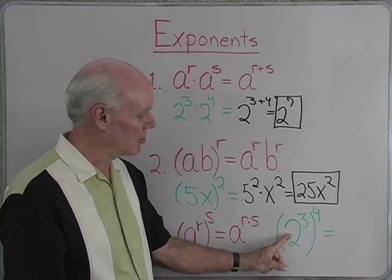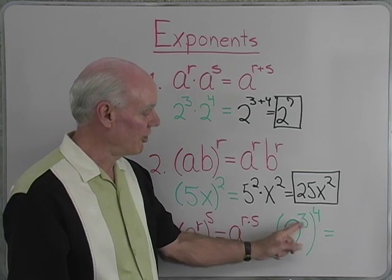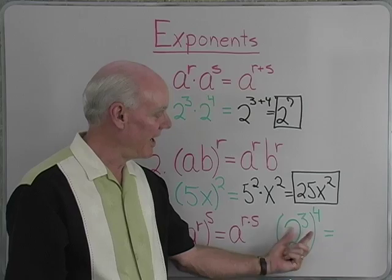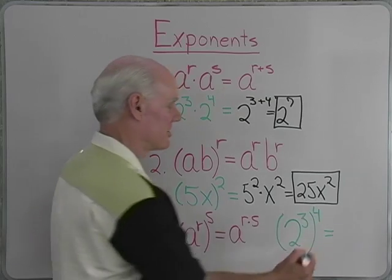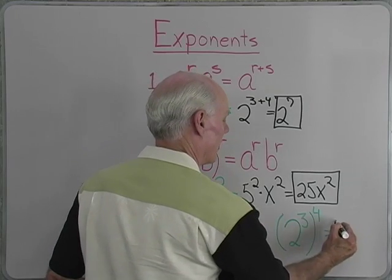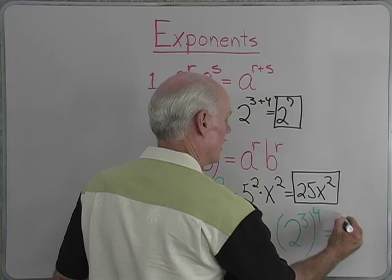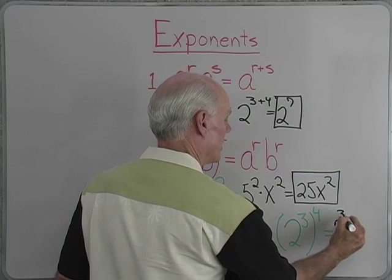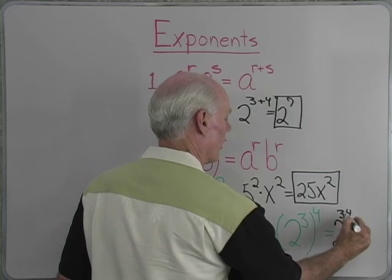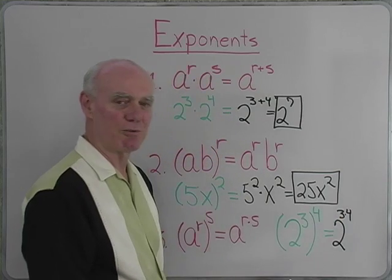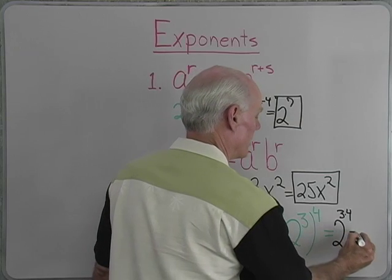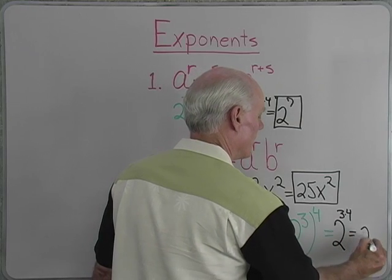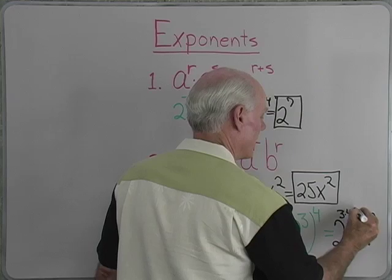So if I had 2 to the 3rd, all of that raised to the 4th, I can simplify that down to 2 to the 3 times 4. 3 times 4 is 12, so that will be 2 to the 12th power.